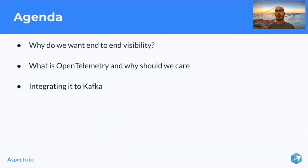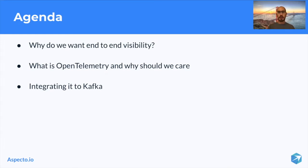Then we are going to do a live demo. In this live demo, we are going to show an application using Kafka.js and Node.js. This demo is going to have two services communicating through Kafka, and we are going to implement OpenTelemetry to gain end-to-end visibility. This will help you understand what OpenTelemetry is, how it's correlated to end-to-end visibility, and how to achieve it.